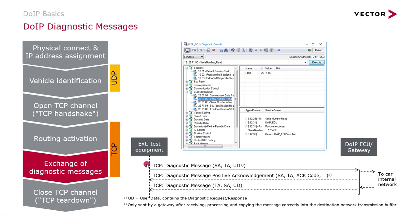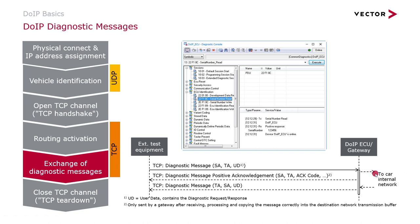Once this is done, we can start doing diagnostics via DoIP diagnostic messages. The tester will start with a diagnostic message, and immediately the gateway has to respond with a diagnostic message positive acknowledgement. This means the gateway has received the message correctly and now tries to forward it to a car-internal network, or processes it internally. If the ECU in the car-internal network responds, the gateway will transfer this message over DoIP via a DoIP diagnostic message, and the response is then visible, for example, in the diagnostics console of CANoe.